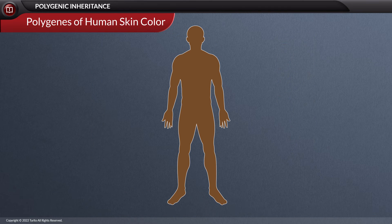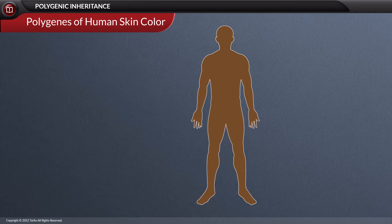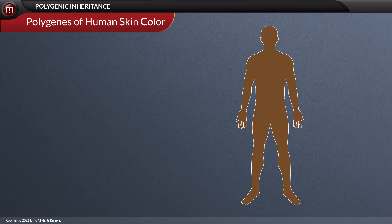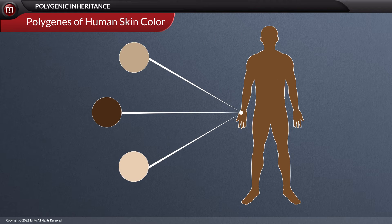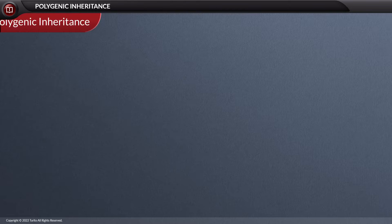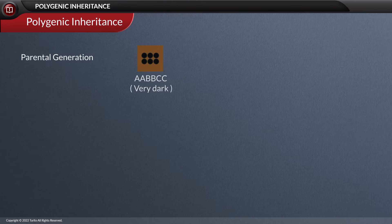For instance, consider that human skin color is controlled by three separate genes: A, B, and C. Each gene contributes to a unit of darkness. The skin color varies from very dark in AABBCC individuals,